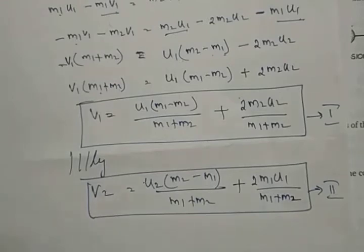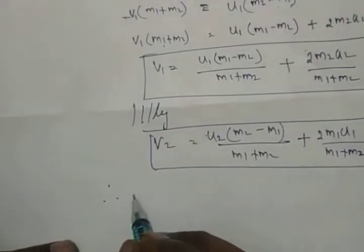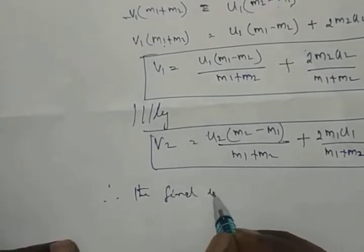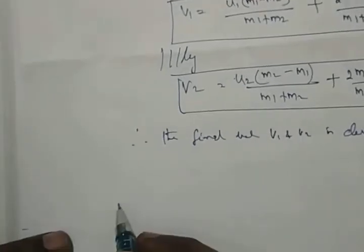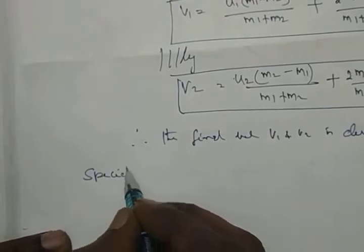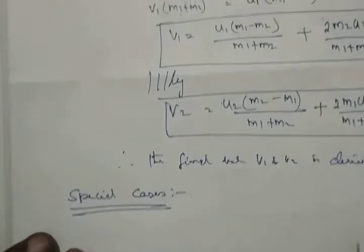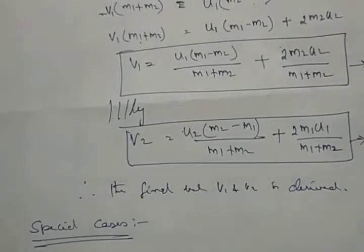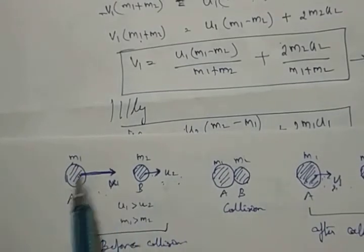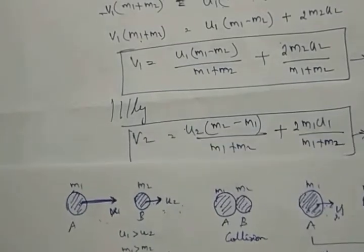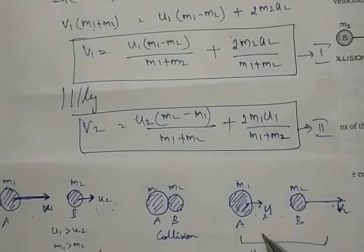The above equations give us the final velocities V1 and V2. Now we move to special cases. We have both equations and the diagram. We will keep changing the situation and see how this formula applies.